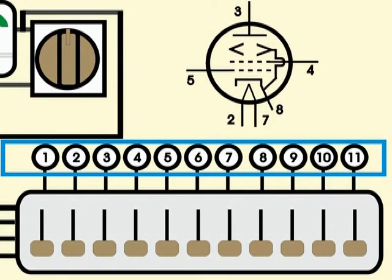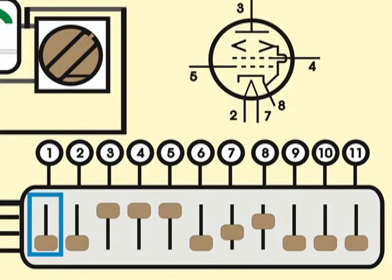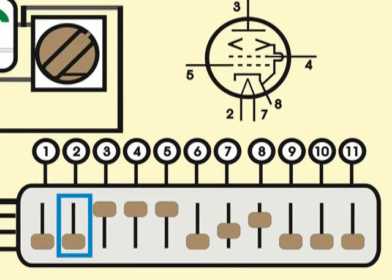Since the 6V6 has no connection in pin number 1, the first sliding switch remains at the bottom position. One end of the filament connects to pin number 2 of the tube, so the second switch is also left in the lower position, which is also a terminal of the filament source.